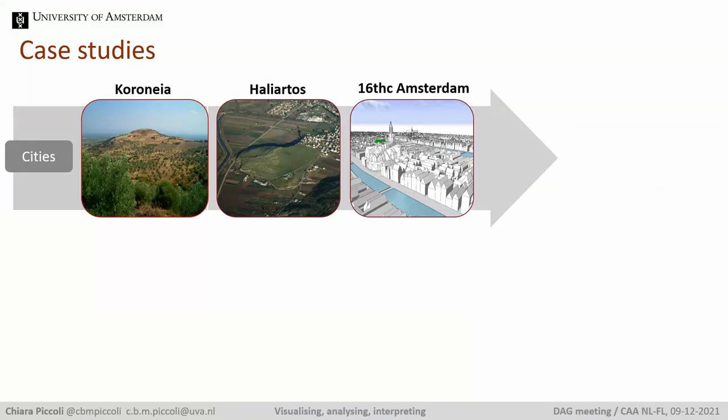First I'll talk about the 3D modeling of cities. The first case study will be the multi-period urban site of Koronia in Boeotia, central Greece, investigated by non-destructive methods within the Ancient Cities of Boeotia project led by John Bintliff. The second case study is another Boeotian city, Halliartos, also investigated by non-destructive survey methods as part of the Ancient Cities of Boeotia project and the Halliartos House project led by Emery Fariniti from the University of Roma 3.